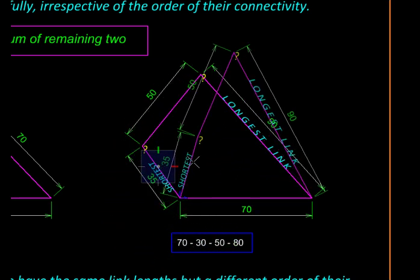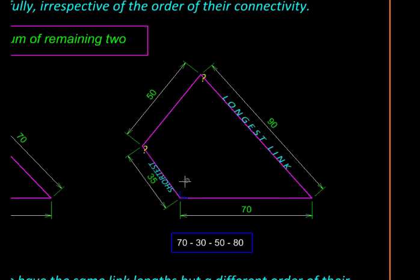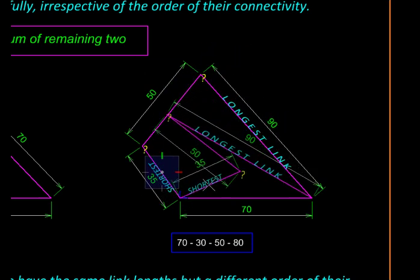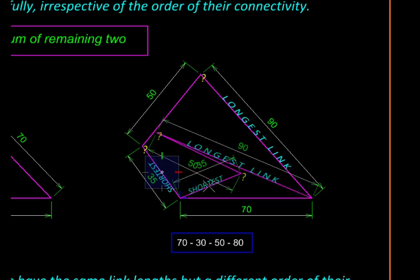Now here we are not getting a crank. Why could that be? Let's see: 35 and 90 add up to 125, while 50 plus 70 is only 120. So Grashof's criterion is violated, so the mechanism gets locked in this position or that position and it can't move.